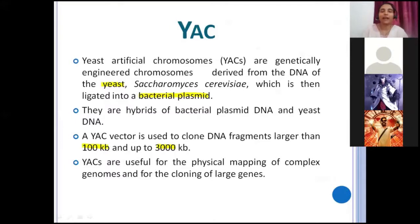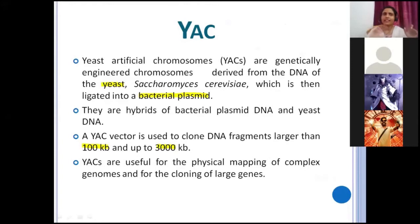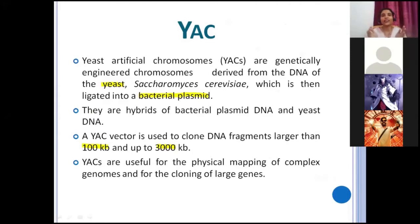Coming to YAC — so BAC was Bacterial Artificial Chromosome, YAC is Yeast Artificial Chromosomes. YACs are genetically engineered chromosomes derived from the DNA of the yeast Saccharomyces cerevisiae, which is then ligated into a bacterial placement from E. coli's F-factor plasmid. So YAC is derived from yeast Saccharomyces cerevisiae and joined to a bacterial plasmid — so it is actually a hybrid of bacterial plasmid DNA and yeast DNA.